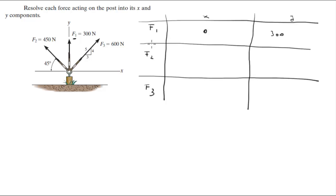F2 is 450 cosine of 45 degrees because the angle is given. This is the X component of F2 and the Y component of F2 is 450 sine of 45 degrees.